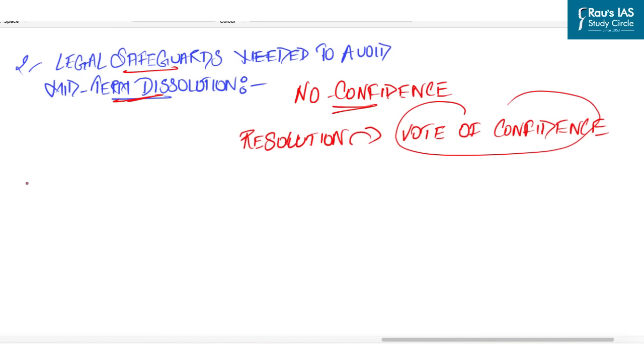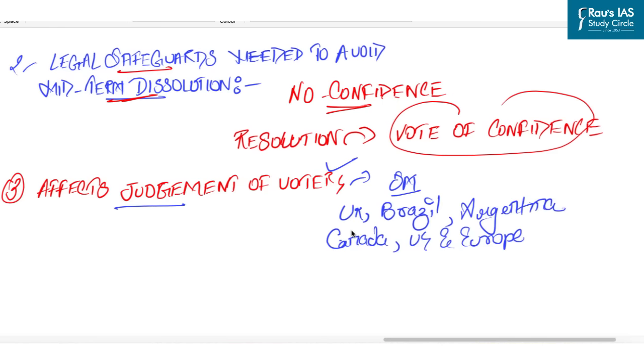Next challenge is that it will affect judgments of voters. National and state issues are different and holding simultaneous elections is likely to affect the judgment of voters. For example, available evidence particularly from the UK, Brazil, Argentina, Canada, US and Europe suggest that simultaneous elections yield more aligned results between national and regional elections. Another challenge is reduced accountability of government.